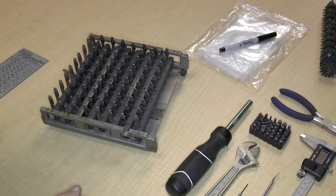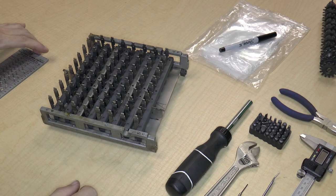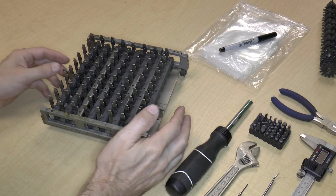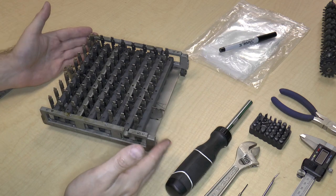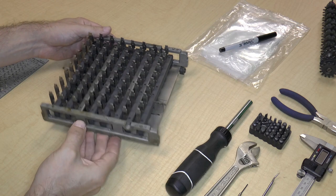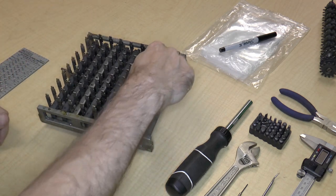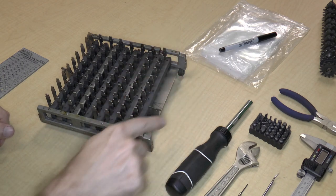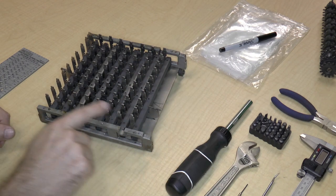Welcome to episode 9 of taking apart a Monroe Mechanical Calculator, Model K. This time we're going to take apart the keyboard assembly.